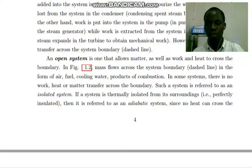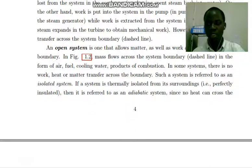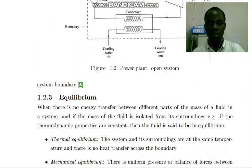In some systems, there is no work, heat or matter transfer across the boundary. Such a system is referred to as an isolated system. If a system is thermally isolated from its surroundings or perfectly insulated, then it is referred to as an adiabatic system since no heat can cross the system boundary.